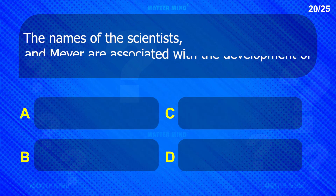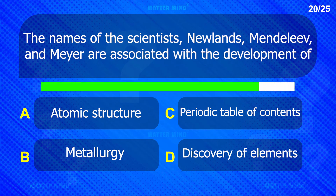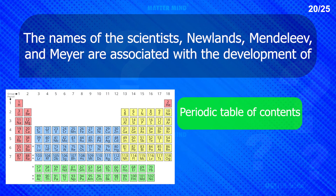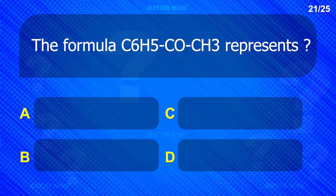The names of the scientists Newlands, Mendeleev, and Meyer are associated with the development of the Periodic Table.